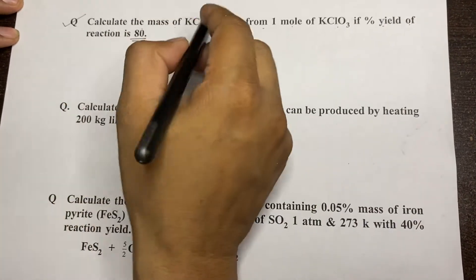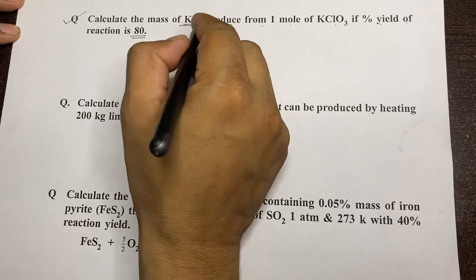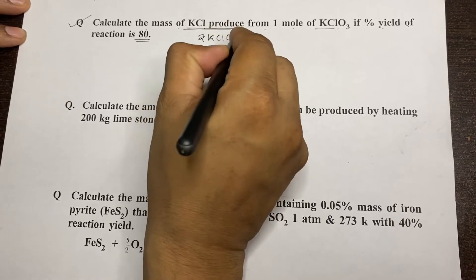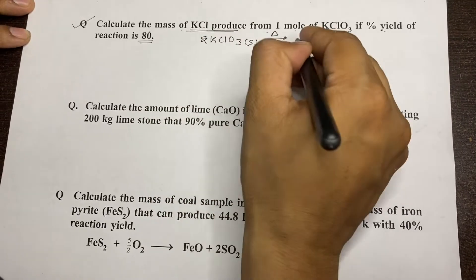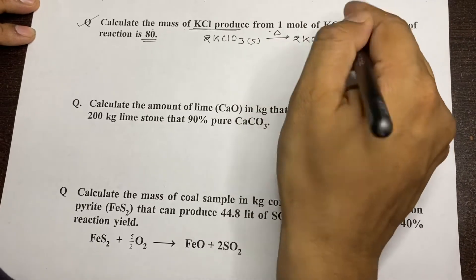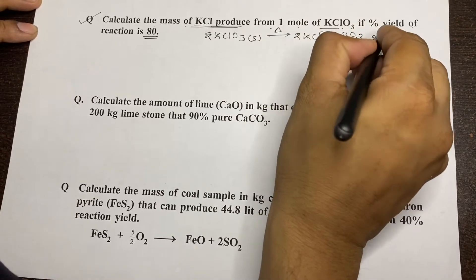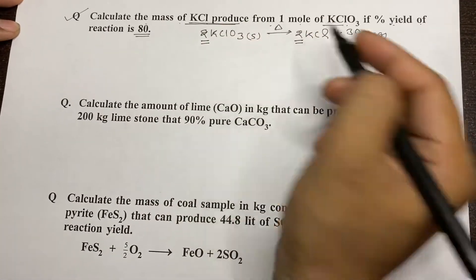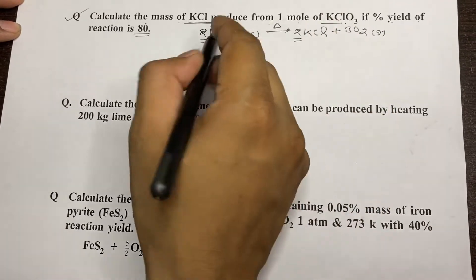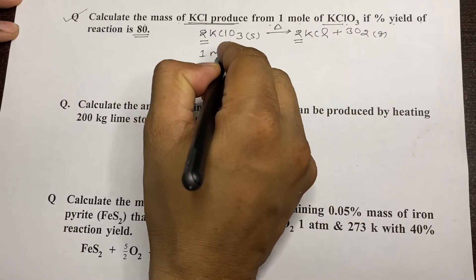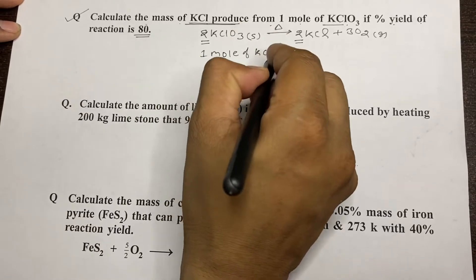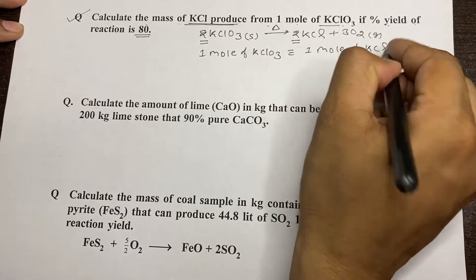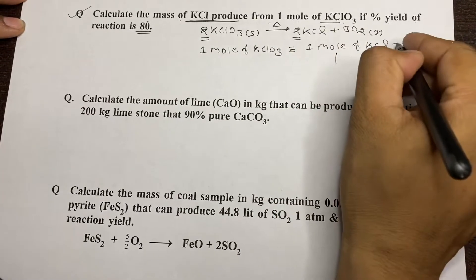First we will write the balanced chemical reaction — the decomposition of KClO₃ into KCl. From the balanced equation, two moles of KClO₃ produce two moles of KCl. So one mole of KClO₃ produces one mole of KCl.